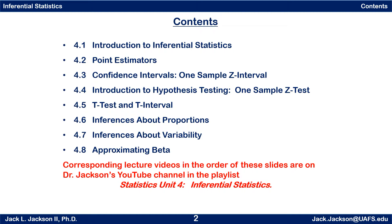This unit has eight main sections which are outlined here. We begin with an introduction and overview of inferential statistics. Next we introduce the idea of point estimators. The third section introduces one of the two main concepts of the unit: confidence intervals. We follow this with an introduction to the other main concept: hypothesis testing. Both of these basic concepts are introduced by exploring inferences about means of populations with a normal distribution of sample means with a known population standard deviation — in other words, a z-test and a z-interval.